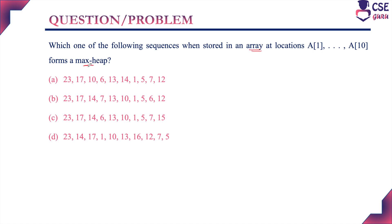Max heap has two properties. One, it should be a binary tree — a root node with two child nodes, that is left child and right child. Second, the parent node, that is the root node, should consist of the maximum value compared to the child nodes. That is the max heap property. If it is a min heap, the root node should contain the minimum value compared to the child nodes.